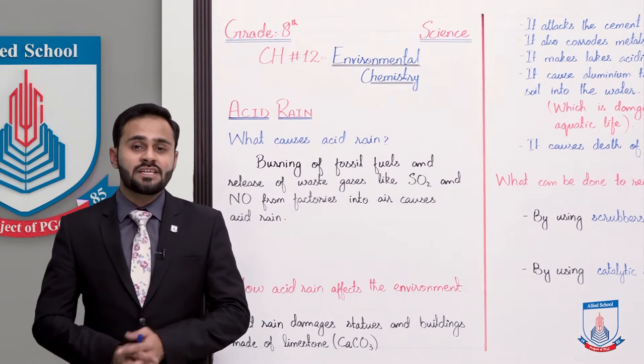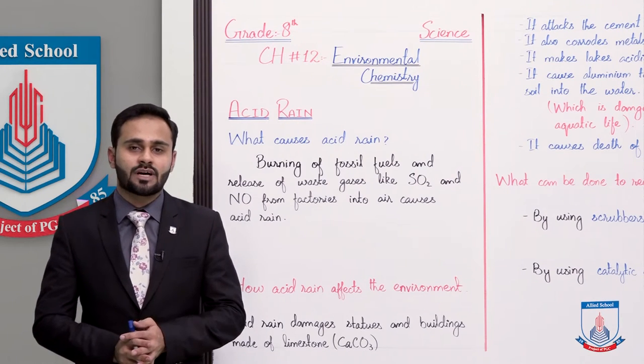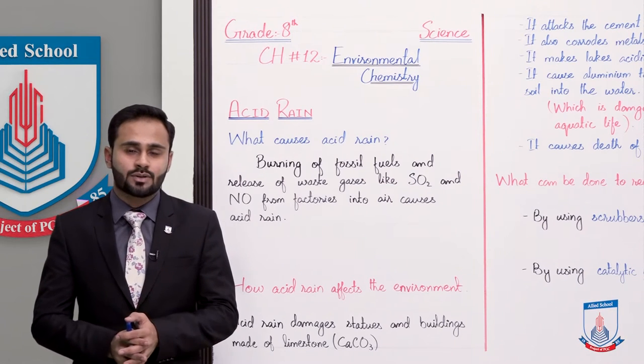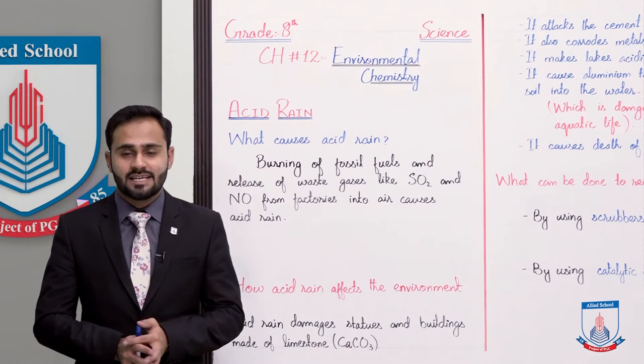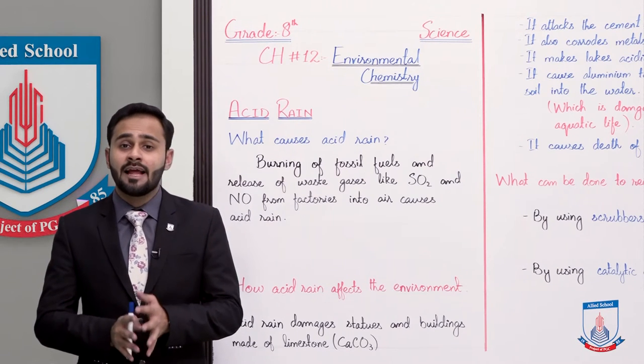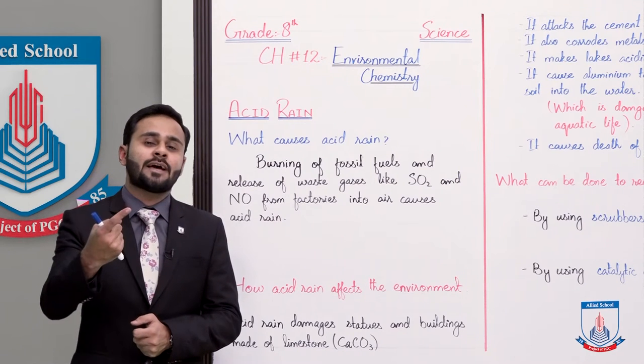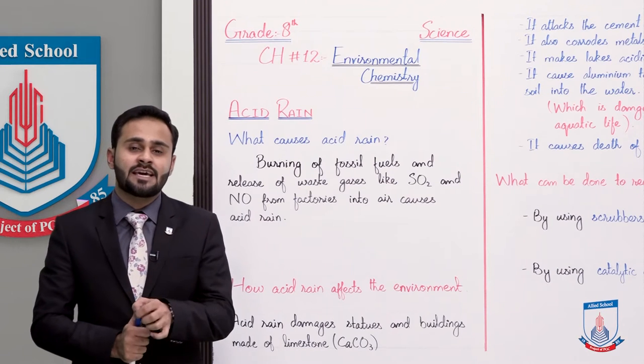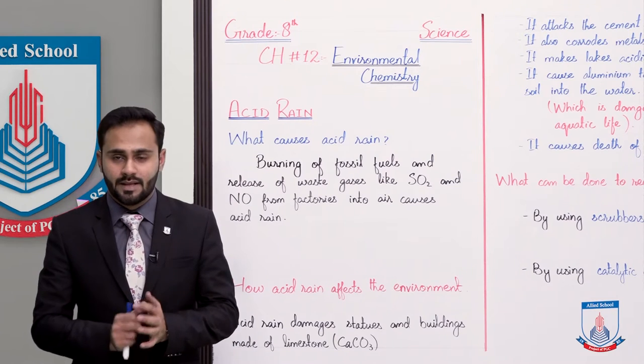So normally in industries or factories, or in our vehicles, where fossil fuels are being burned, when these are burned, some gases are produced such as sulphur dioxide gas and nitrogen oxide gas. When these gases go into the air, when sunlight falls on them, that causes acid rain. Clear?